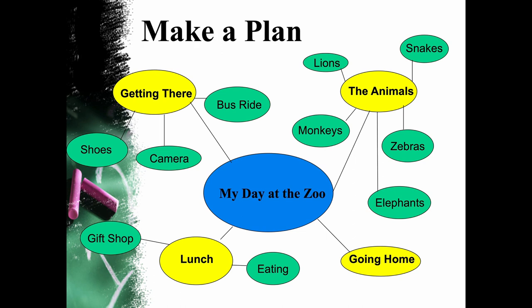First you need to make a plan. This web is about a day at the zoo — that is the theme of the paper, then it's broken down into paragraphs. The first paragraph would be getting there: what to bring, the shoes, the bus ride, a camera. Another paragraph would be about the animals you saw: snakes, lions, monkeys, zebras, elephants. Another paragraph might cover lunch, what you ate, free time, maybe the gift shop. The last paragraph would be going home.